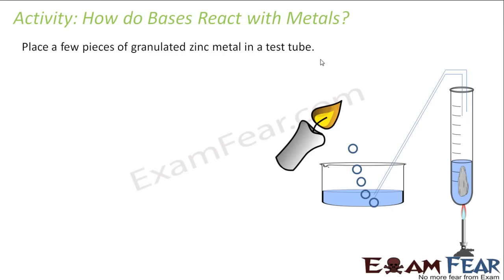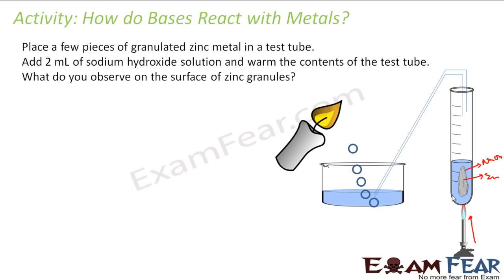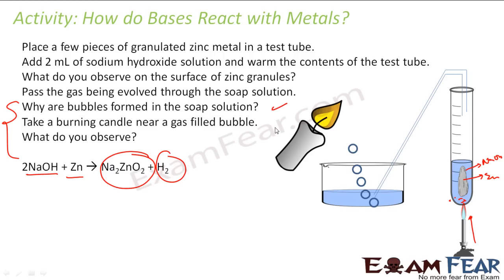We will do a similar activity. We take some zinc and add sodium hydroxide. In this case, we need to heat it up. We heat it, and we get a product and some gas. Same method: we pass the gas through soap solution and bring a burning candle near the bubble — the bubble bursts again. So the reaction gives Na₂ZnO₂ plus hydrogen gas, confirming it is hydrogen.